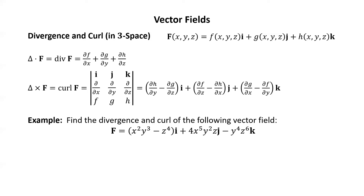Let's try an example. Find the divergence and curl of the given vector field using the definitions. Pause the video, try it yourself, then resume to check your answers. For the divergence of F: we take the partial of the first component with respect to x, which is 2xy³ (the z⁴ term goes to zero). Then the partial of the second component with respect to y, which is 8x⁵yz. Then the partial of the third component with respect to z, which is −6y⁴z⁵.